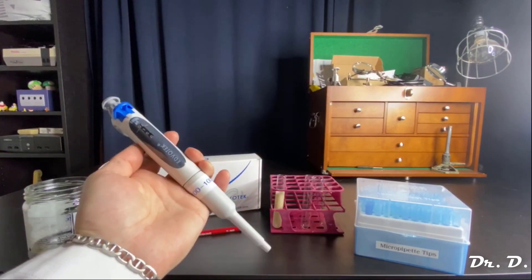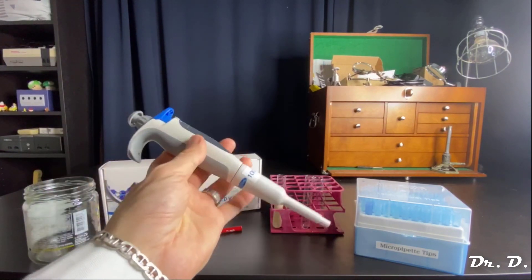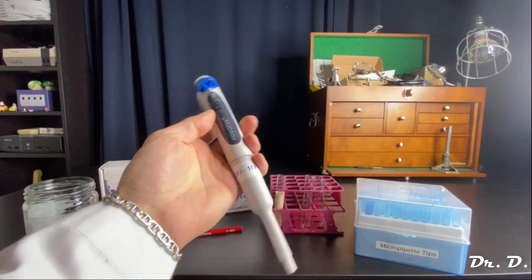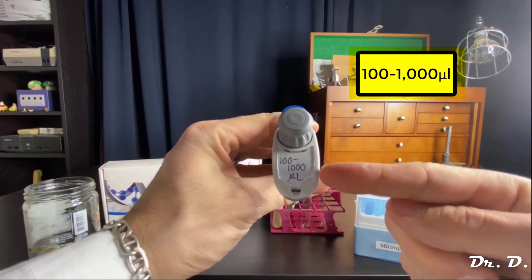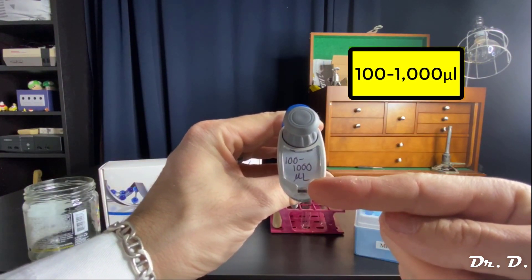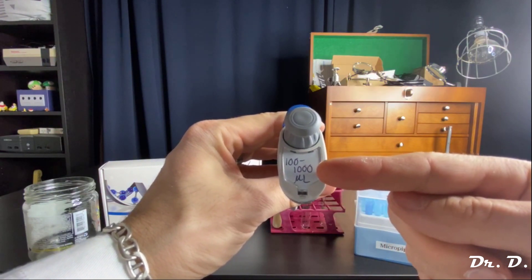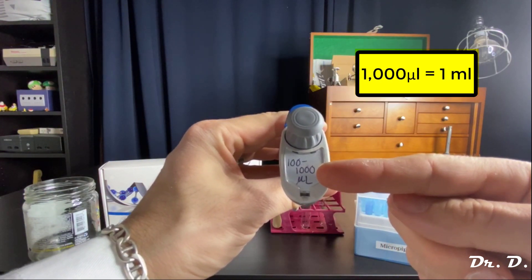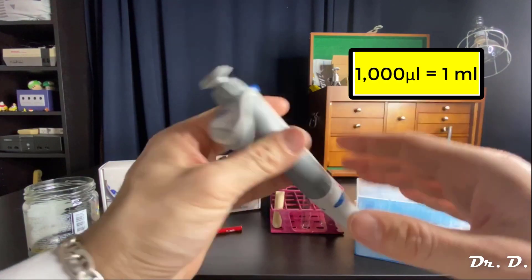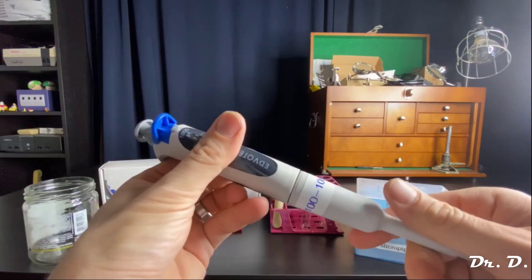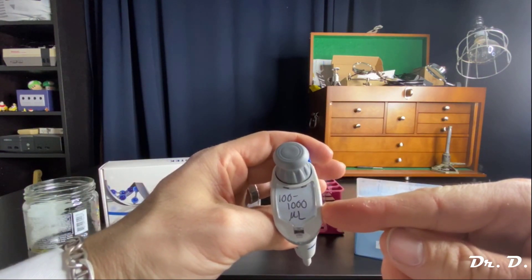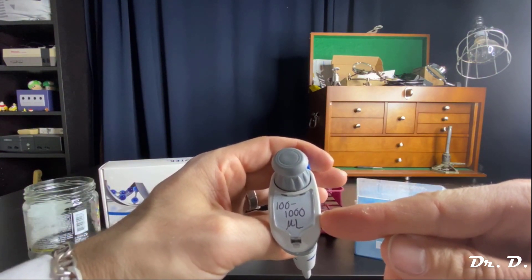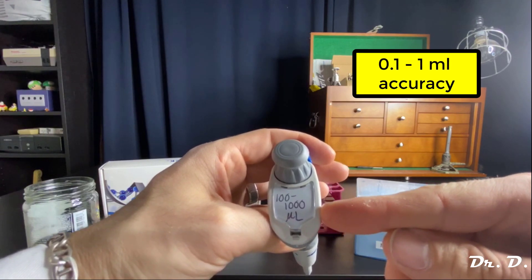Here we have the Edvotech micropipettor. This is a P1000 micropipettor, which means that it is accurate between 100 to 1000 microliters. Remember that 1000 microliters is a milliliter. So this pipettor is accurate between 100 and 1000 microliters, which means 0.1 to 1 milliliters.